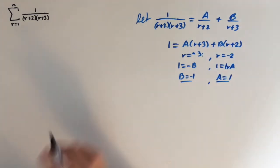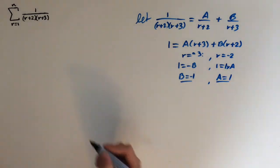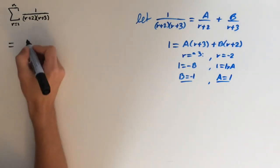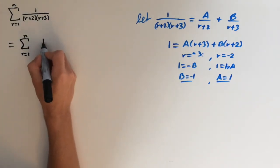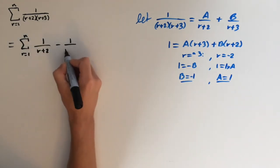So now we can substitute this back into the series. And this is going to give us sigma r equals 1 to n of 1 over r plus 2 minus 1 over r plus 3.